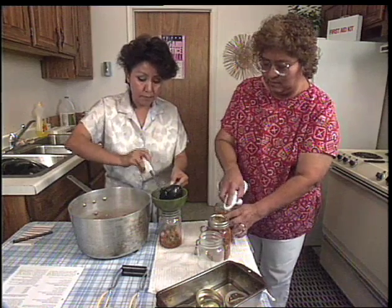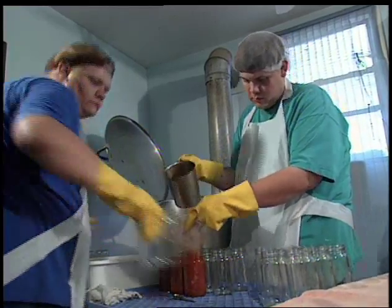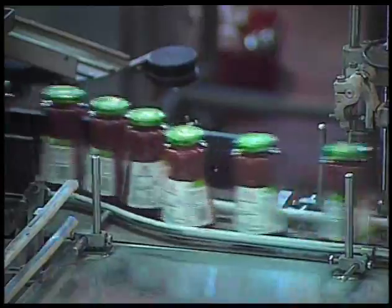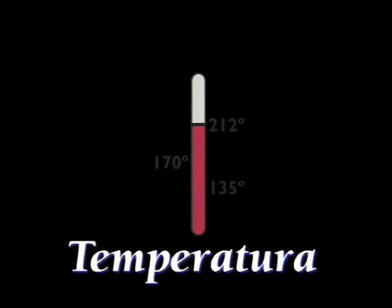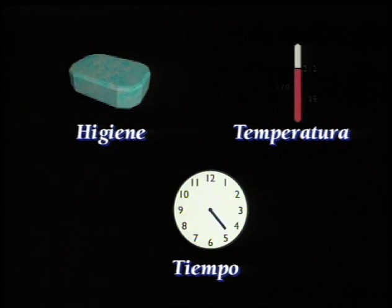Las etapas en la preparación de la salsa son las mismas, ya sea usted un procesador pequeño, mediano o grande. Todos comienzan con la materia prima, es decir, los ingredientes para la salsa, un local y el equipo de proceso. Los elementos más importantes en cada etapa son la higiene, la temperatura y el tiempo. Si usted presta atención a cada uno de estos factores, las probabilidades de contaminación serán mínimas.